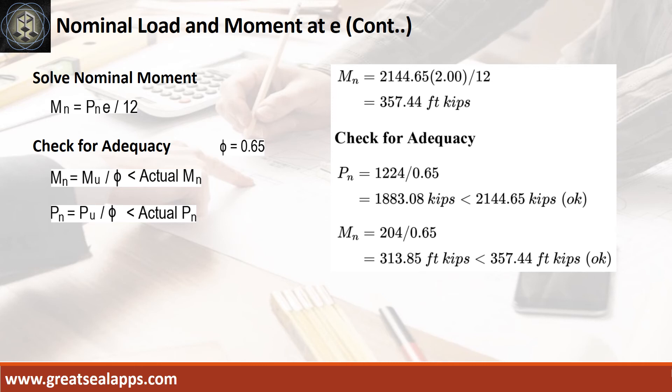Check for adequacy. The nominal design axial load is 1,883.08 kips, less than actual load capacity of 2,144.65 kips. And nominal design moment is 313.85 kips, less than actual moment capacity of 357.44 kips.